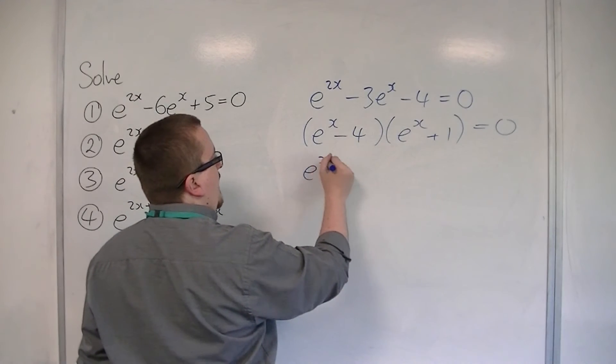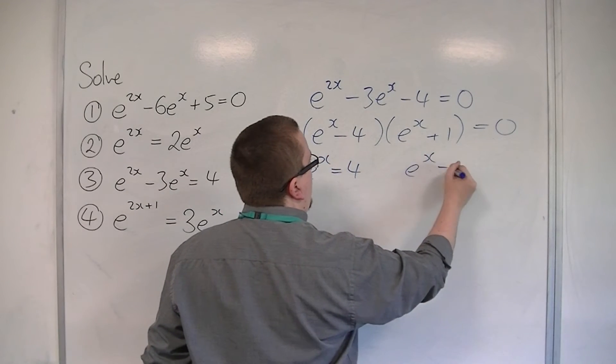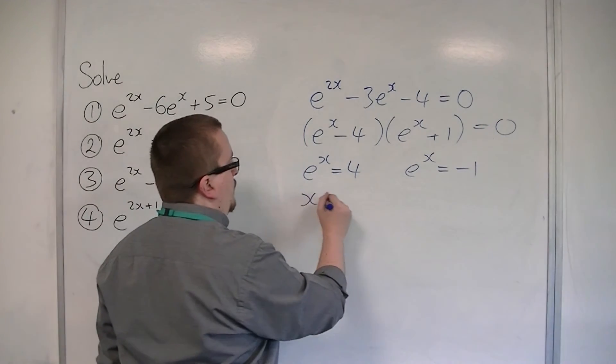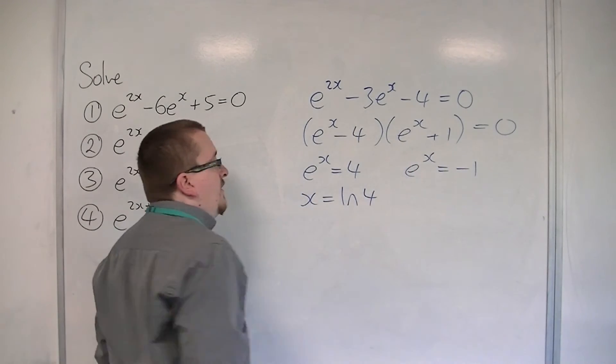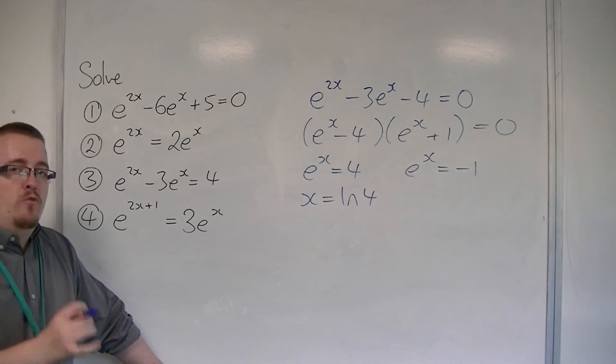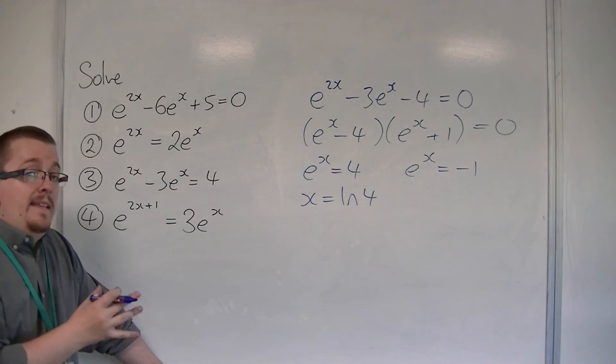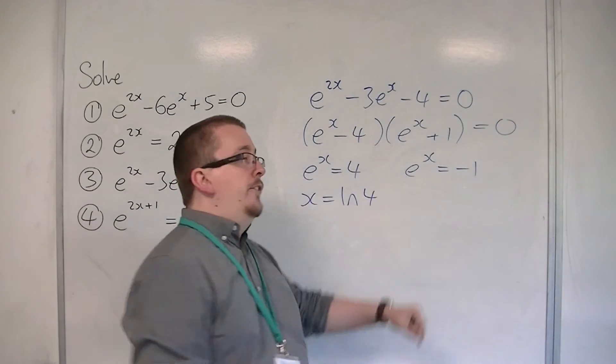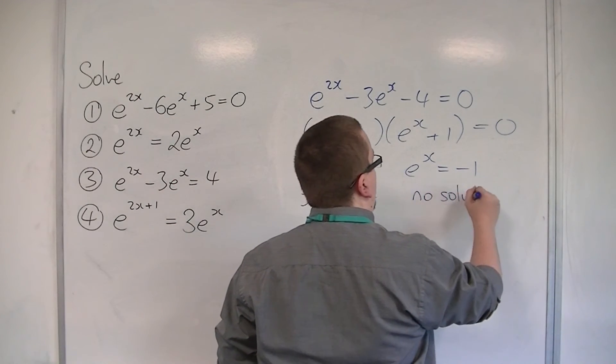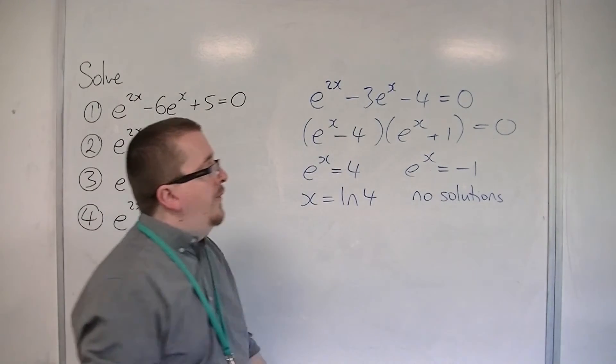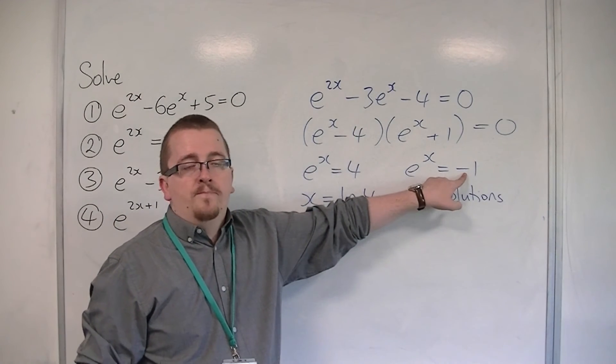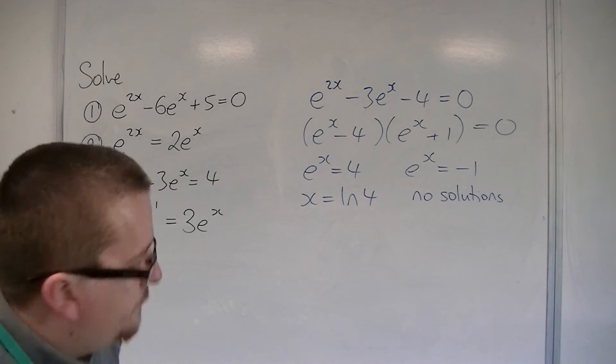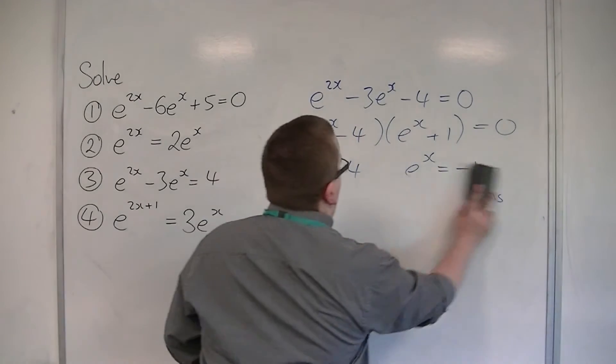So either e to the x is equal to 4 or e to the x is equal to minus 1. If e to the x is equal to 4, then x is equal to log 4. For e to the x is equal to minus 1, for exactly the same reason as for the previous example, e to the x does not cross the x-axis and so can never become negative, and so this equation has no solutions. Even if you tried to take logs of both sides, you'd end up with log of minus 1, which doesn't exist. The calculator would give you a math error.